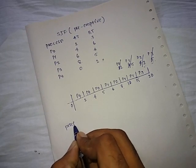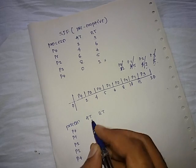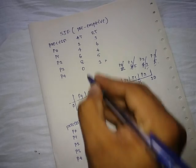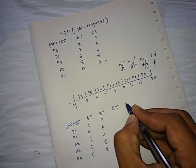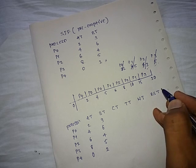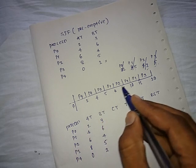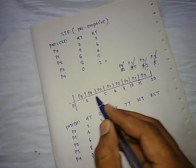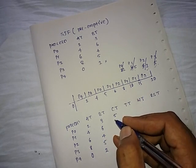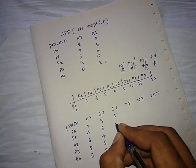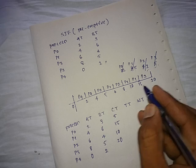Producing a table: processes are P0, P1, P2, P3, P4 with arrival times 2, 4, 6, 8, 0 and burst times 3, 6, 4, 5, 2. The next columns are completion time, turnaround time, waiting time, and response time. Completion times: P0 completes at 5 (last occurrence in Gantt chart from right), P1 at 15, P2 at 10, P3 at 20, P4 at 2.